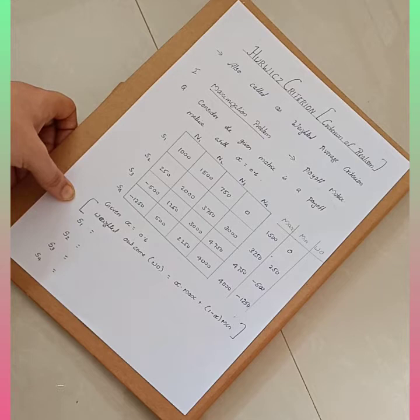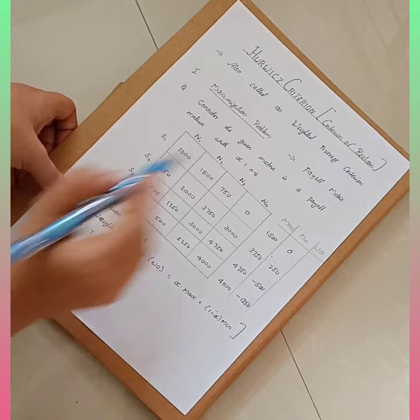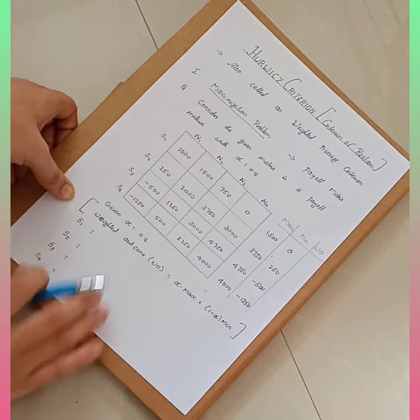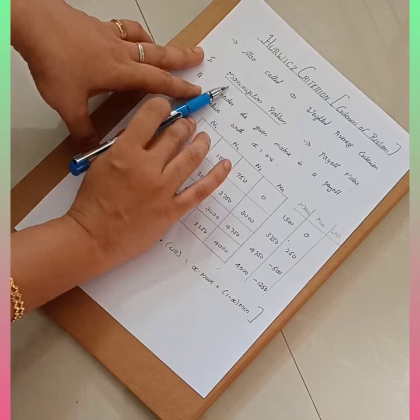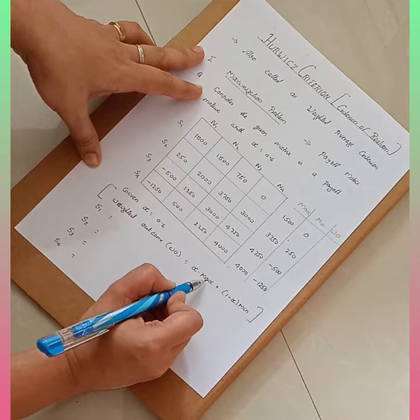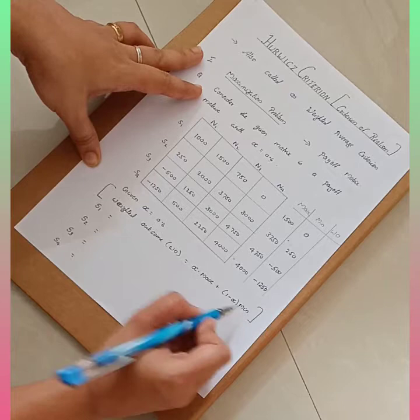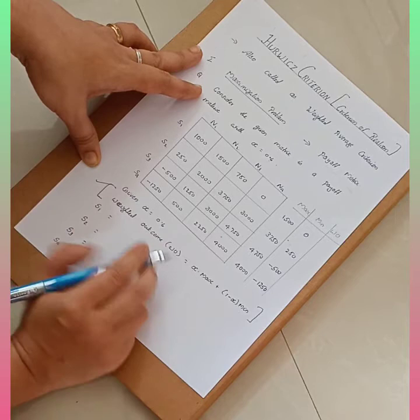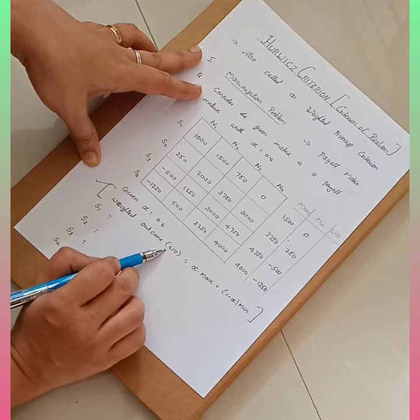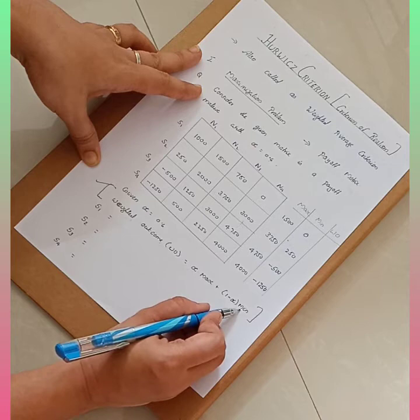In some questions, the alpha value will not be given, so in that case you need to assume that alpha is 0.5. Now in this question, alpha value is already given as 0.6. For the maximization problem under Hurwicz's criterion, the weighted outcome is found using the formula: alpha into maximum value plus 1 minus alpha into minimum value. You have to be very careful — this formula is for the maximization problem. For the minimization problem, the weighted outcome formula is different.